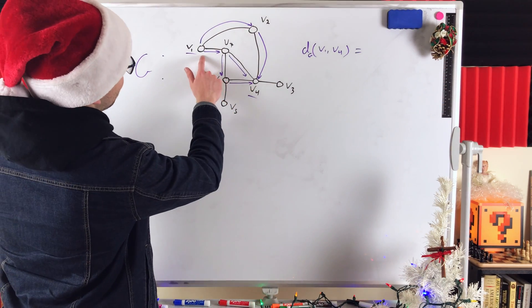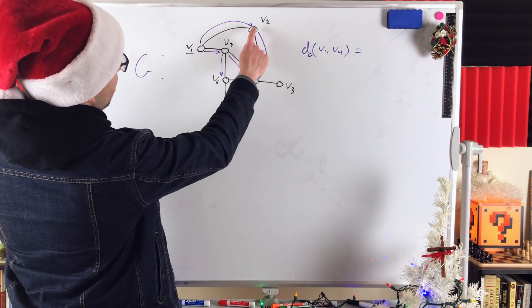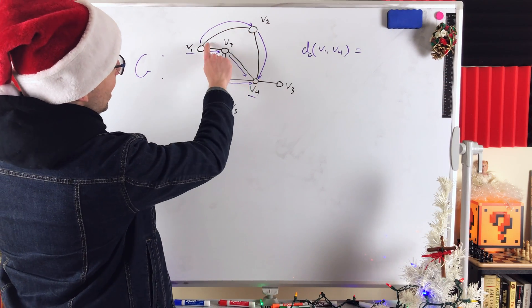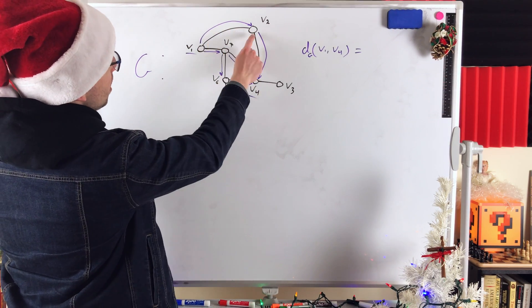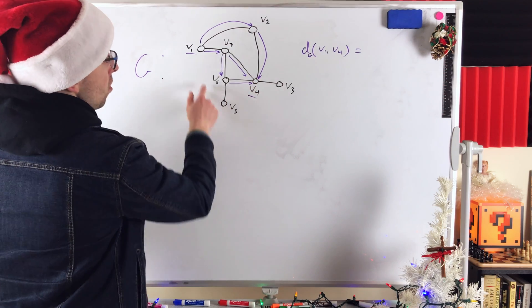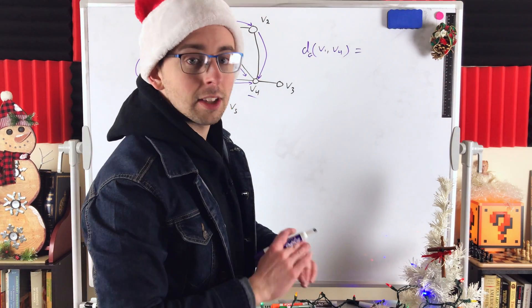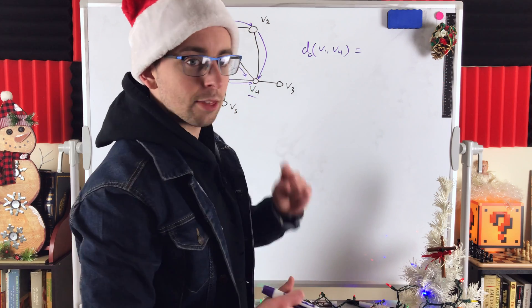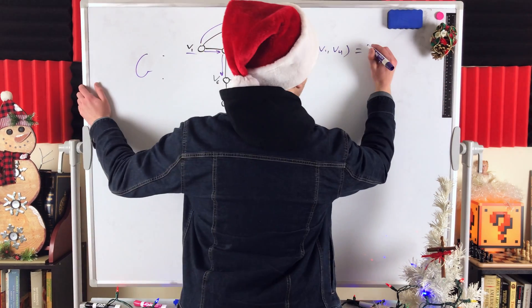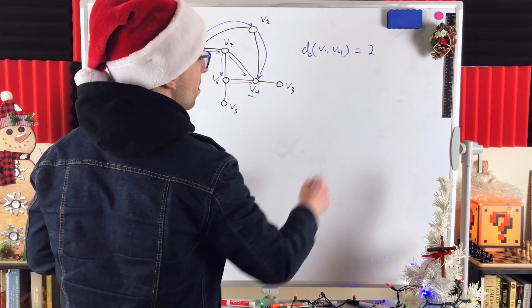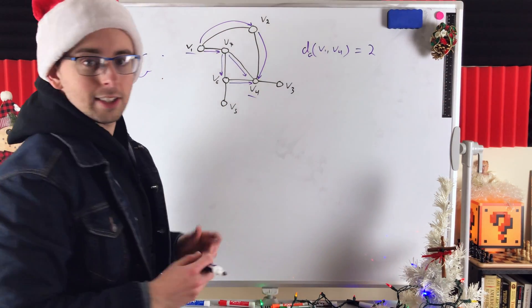Notice I say a shortest path because they're not necessarily unique. Here we see there are two paths, this one and this one, that have length 2 going from V1 to V4. It takes two edges to get from V1 to V4. There's no way to get from V1 to V4 in less than two edges. There's no path connecting them with length 1, so their distance is 2. Again, that is the length of a shortest path that connects V1 and V4.